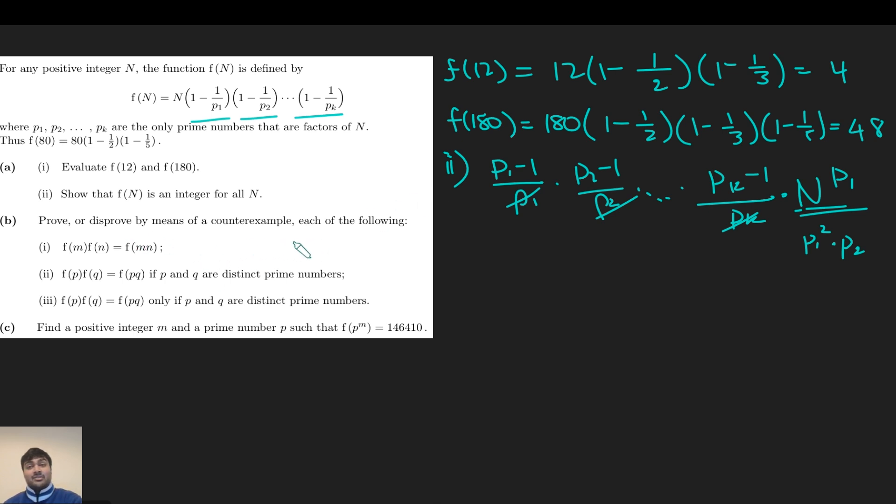Part B: Prove or disprove by means of a counterexample each of the following. Part 1: f(m) times f(n) equals f(mn). Part 2: f(p) times f(q) equals f(pq) if p and q are distinct primes. And Part 3: f(p) times f(q) equals f(pq) only if p and q are distinct primes. This is interesting because each of these three parts are suspiciously similar. Now, this has to be false. Why am I so sure? Well, if it was true for all positive integers m and n, then Part 2 would be true, and Part 3 would be false, and I can move on to Part C.